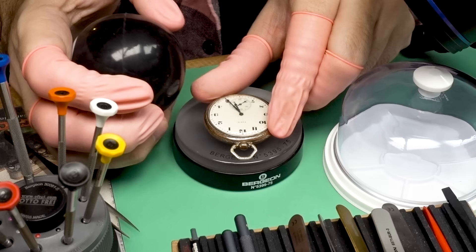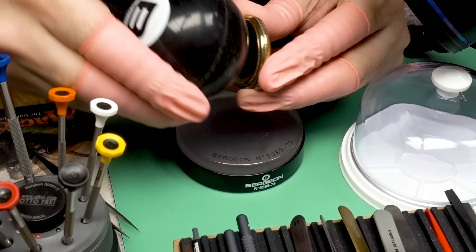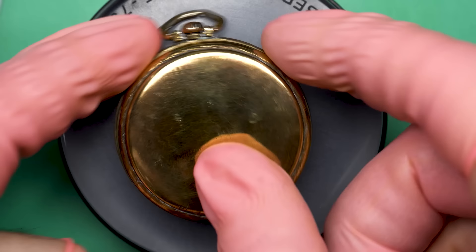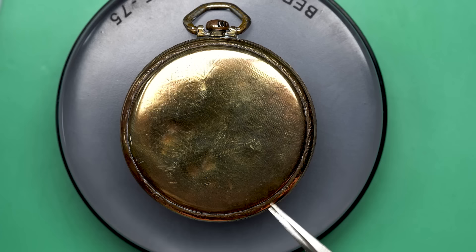There were some dents on the back and the back's really hard to get off of this thing. I want to see what the movement looks like inside. But this watch has had a life. This one was used. Let's take a look at what the movement looks like inside.